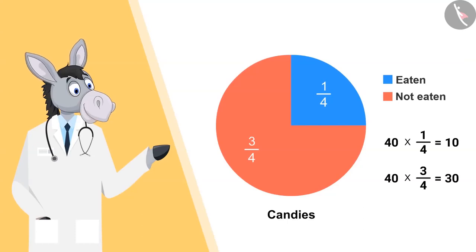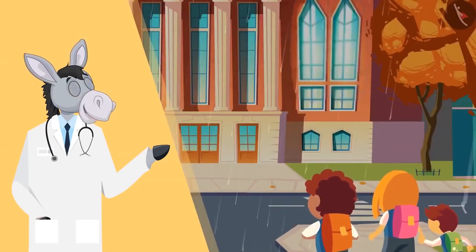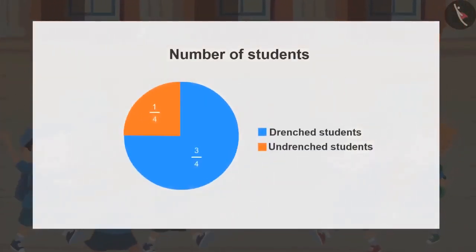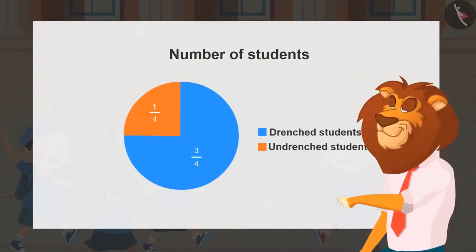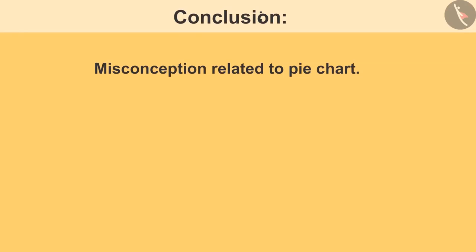Very good. Today while coming to school, students got drenched in rain. Can you tell, has more than half of the students got drenched by the rain? Yes, more than half of the students got drenched in the rain, as three-fourth students got drenched. Very good. So I am hoping now your doubt has been cleared regarding the misconception of one-fourth and three-fourth being equal.